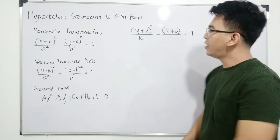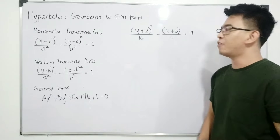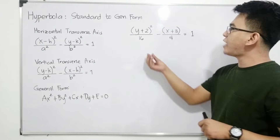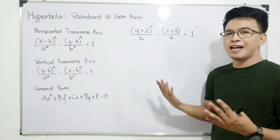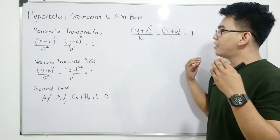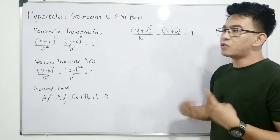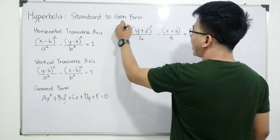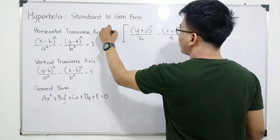Now, how do we convert it into general form? We have denominators 16 and 4, and our target is to remove them. The first step is to multiply the whole equation by 16 times 4.